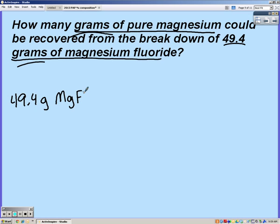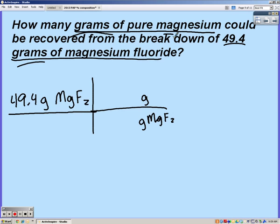So we're going to start with what they gave us, 49.4 grams magnesium fluoride. So grams magnesium fluoride has to go on the bottom because it's already in the unit grams and we're looking for grams of the same substance. We don't have to convert to moles, we're just going to go straight to grams.